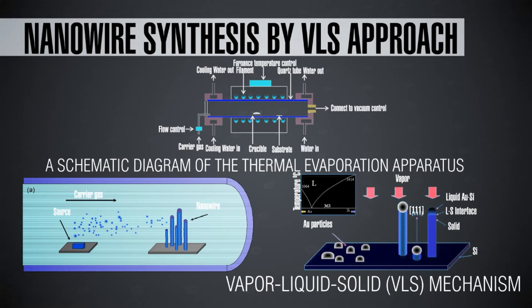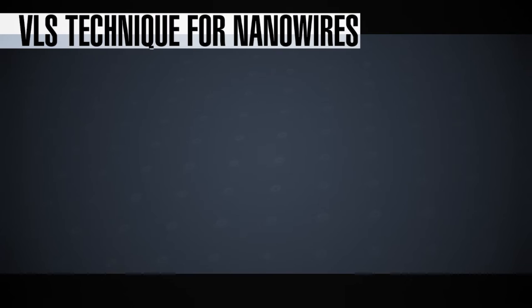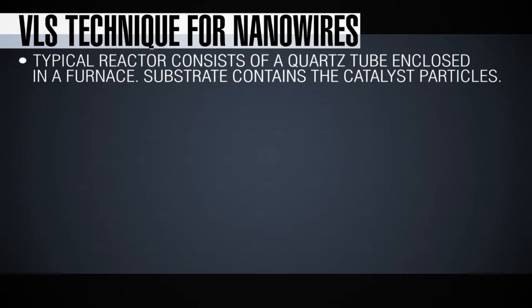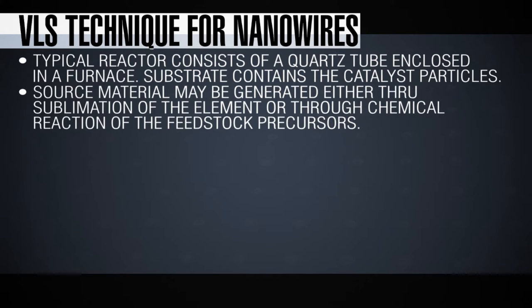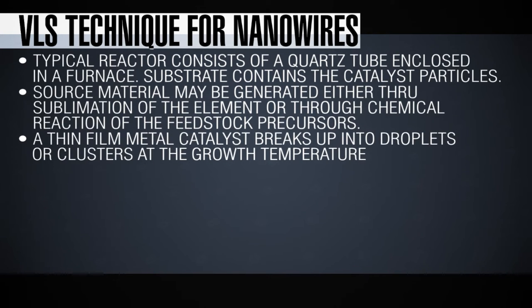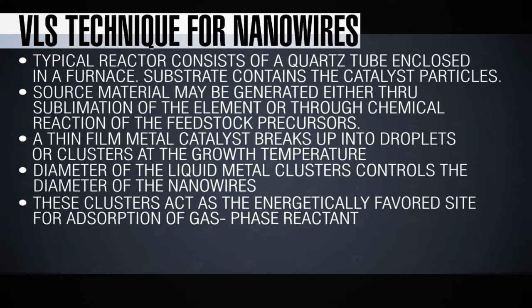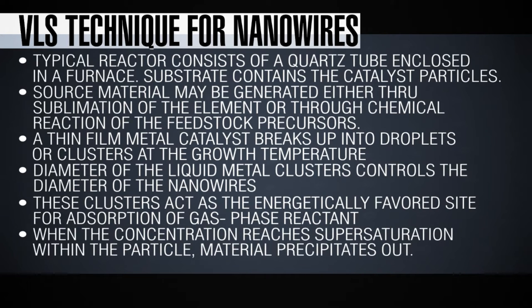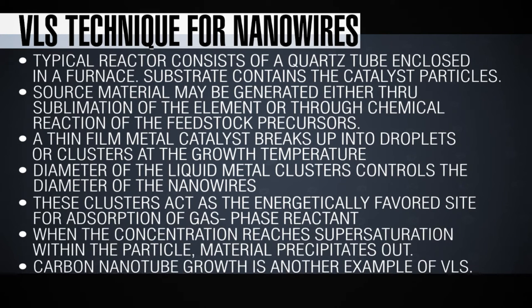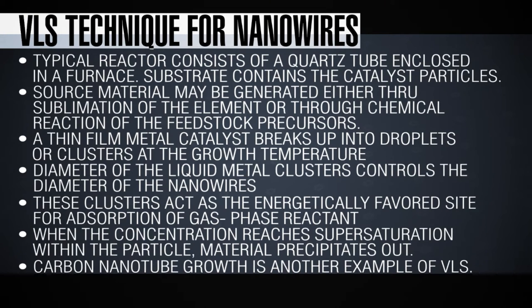Typical laboratory equipment in VLS growth involves a quartz tube inserted in a furnace. It would be preferable to have a two-zone furnace. That way, the first zone can be used to create precursors, and then the second zone can have the substrate heated to the specific temperature, and the growth can occur in the second zone. The growth zone temperature can be completely different from the temperature in the first zone, which creates the precursor. So it's ideal to have two separate zones with independent temperature control.